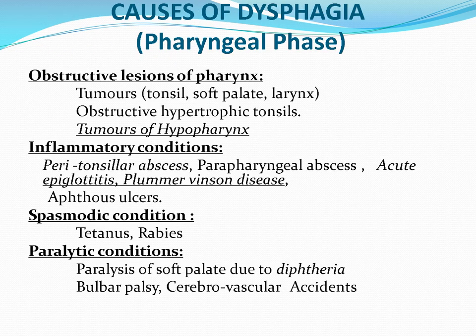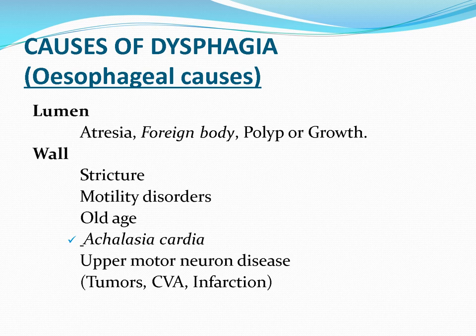Obstructive lesions of the pharynx include tumors of the tonsils, palate, and larynx, and hypertrophic tonsils. Tumors of the hypopharynx can also cause swallowing problems. Inflammatory conditions include peritonsillar abscess, parapharyngeal abscess, acute epiglottitis, and Plummer-Vinson syndrome. Spasmodic conditions like tetanus and rabies cause dysphagia due to muscle spasm. Paralytic conditions include paralysis of the soft palate due to diphtheria, bulbar palsy, and CVA.